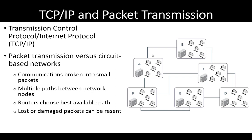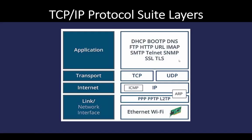In a packet-based network, all the data does not stay together — it's broken up and may choose different paths. Routers are used to choose the best available path. Lost and damaged packets can be detected, and the originator can resend those when needed.